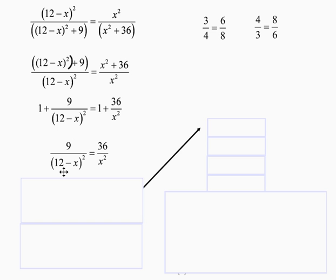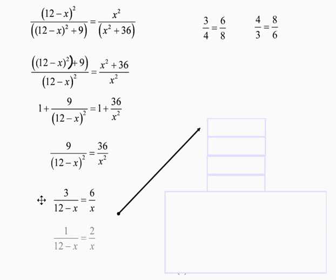Next observation: 9, 12 minus x squared, 36, and x squared are all perfect squares. I will take the square root of both sides of the equation to produce 3 over 12 minus x equals 6 over x. I will then divide both sides by 3 to make the numbers even smaller. That's when I get to cross-multiply, distribute the 2, add 2x to both sides, and divide by 3.